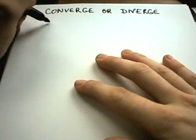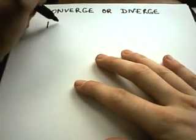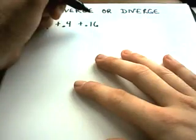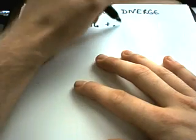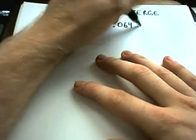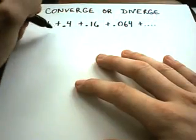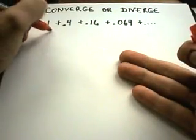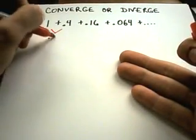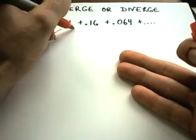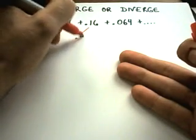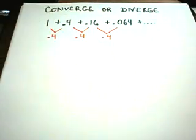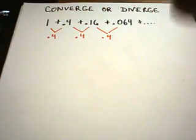So suppose my first series is 1 plus 0.4 plus 0.16 plus 0.064. We'll assume this pattern continues. Notice the number I'm multiplying by. It's pretty easy to spot on the first one. It looks like I'm multiplying by 0.4. And notice if I multiply 0.4 by 0.4, again I'll get 0.16. I'm multiplying 0.16 by 0.4, I'm going to get 0.064.